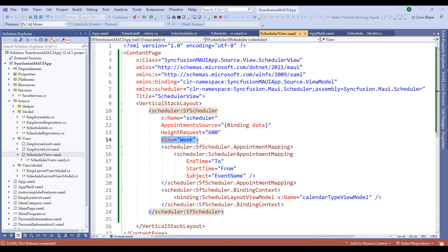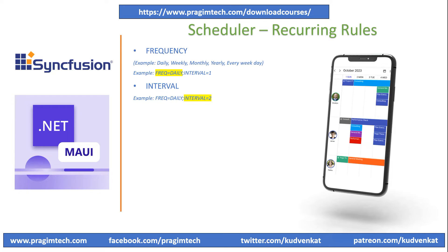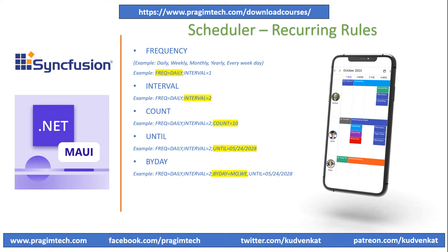Let's now understand how to add recurring events to the scheduler. Before writing the code, let me walk through the recurring rules available in Syncfusion. Recurring rules define recurring appointments in the scheduler control. The Frequency property plays a major role — it can be set to Daily, Weekly, Monthly, Yearly, or Every Weekday. Interval is an integer tied to the frequency. Count defines how many times the event occurs. Until defines the end date for recurring appointments. ByDay defines the specific days the event recurs — for example, daily until 24th May 2028 on all Mondays and Wednesdays. There are also ByMonthDay, BySetPosition, WeekStart, and ExDate properties.